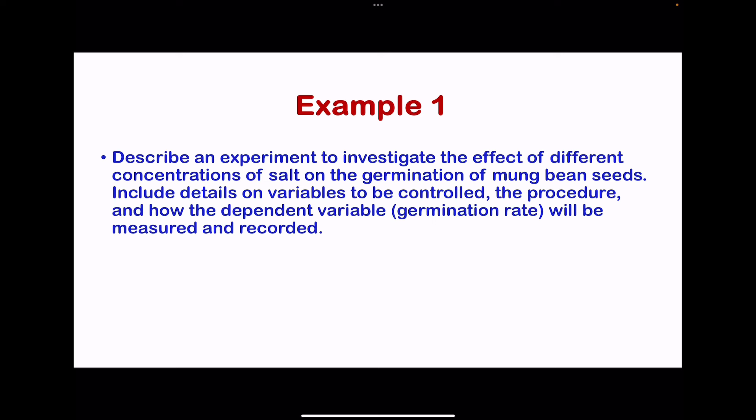The first example: describe an experiment to investigate the effect of different concentrations of salt on the germination of mung beans, including details on variables to be controlled, the procedure, and how the germination rate will be measured and recorded. This question focuses on different concentrations of salt, so we prepare petri dishes with filter paper, evenly distribute mung bean seeds on the filter paper, then add different concentrations of salt solution — for example, 0%, 1%, 2%, 3%, 4%, and so on.